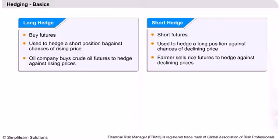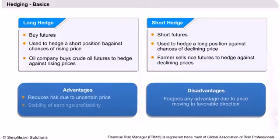In a long position, traders enter into a short hedge by shorting futures contracts. This is done to protect them against the chances of a decline in prices. For example, a farmer sells rice futures to hedge against falling prices.